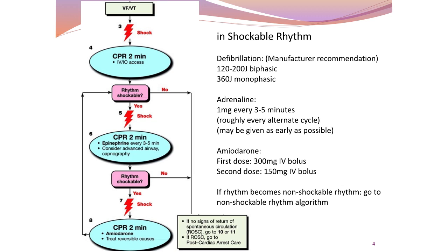If the rhythm is shockable, give defibrillation then continue CPR for 2 minutes, then check pulse and rhythm again. If still shockable with no pulse, give another defibrillation and immediately resume CPR. Once IV access is available, give IV adrenaline 1 mg every three to five minutes. After two minutes of CPR, if another shock is needed, start IV amiodarone 300 mg IV bolus. Amiodarone can be given as a bolus twice; the second dose is 150 mg. If the rhythm becomes non-shockable, go to the non-shockable rhythm algorithm.